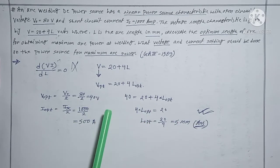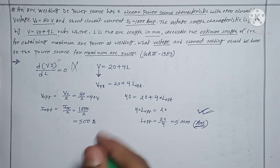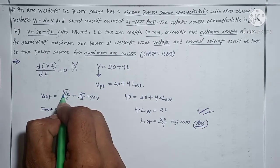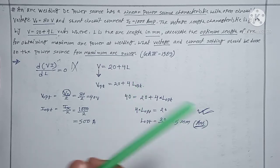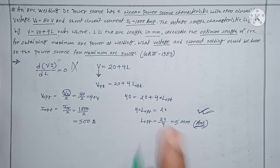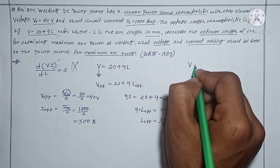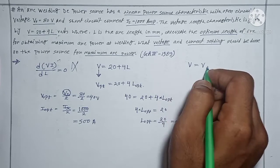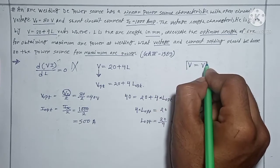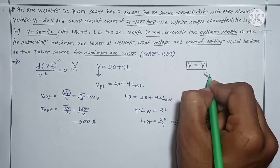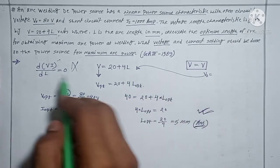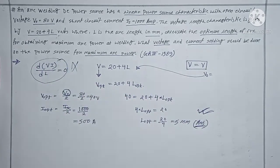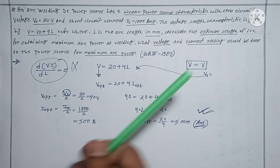This method can be applied everywhere. You only require the open circuit voltage. If the open circuit voltage is not directly given, you have to use the equilibrium condition — equate the voltage in the arc length characteristic with the voltage in the V-I characteristic to find the open circuit voltage, and then apply this method.